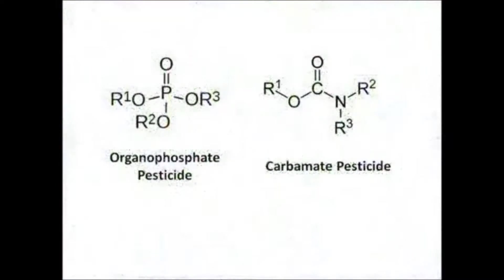Two common pesticide families are organophosphates and carbamates. Organophosphates inhibit cholinesterase, an enzyme in the human nervous system that breaks down acetylcholine, a neurotransmitter that carries signals between nerves and muscles. This is the method it uses to kill pests.